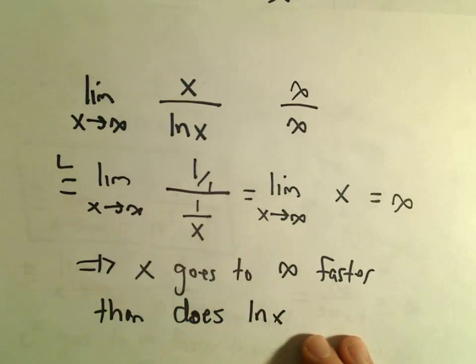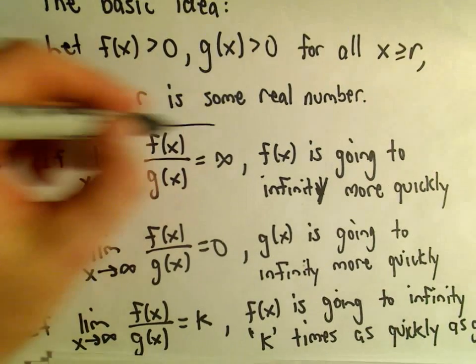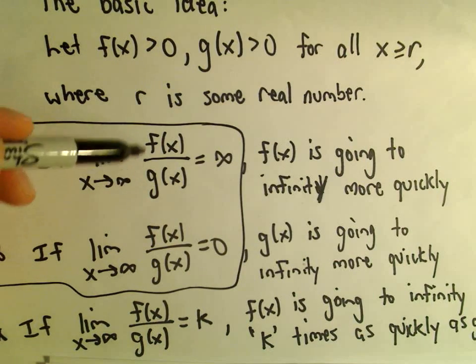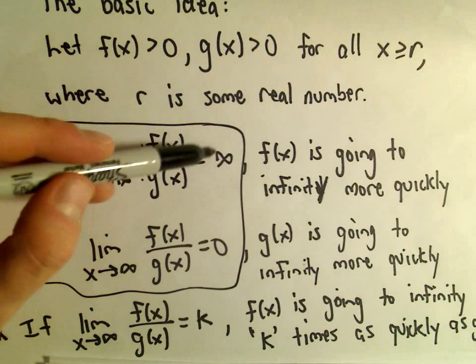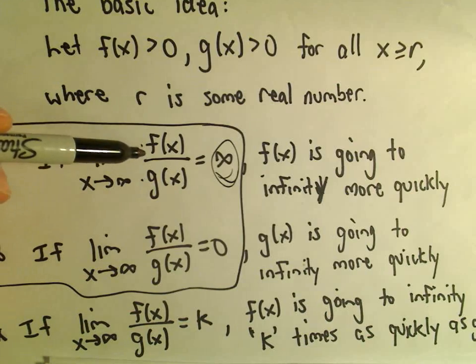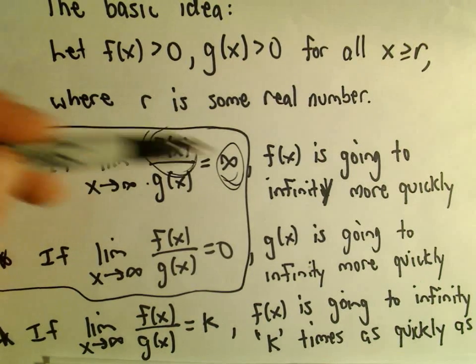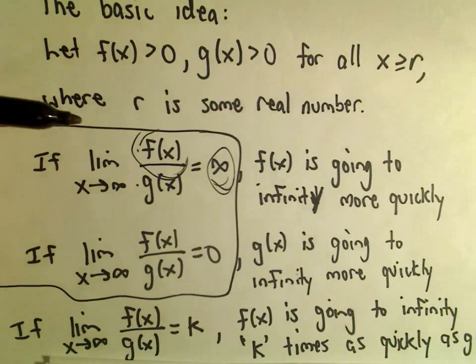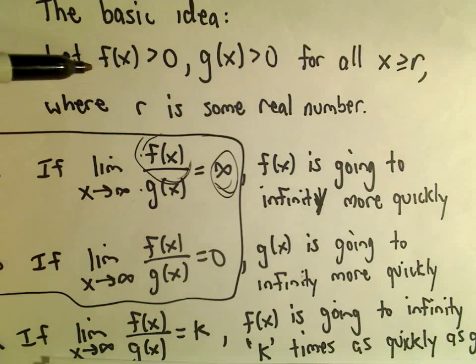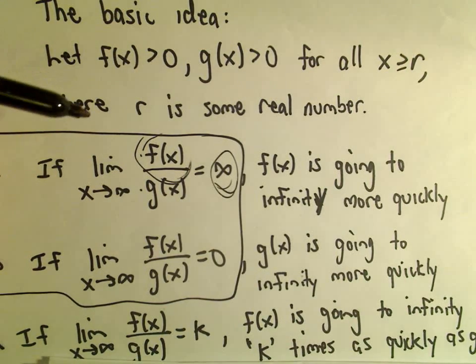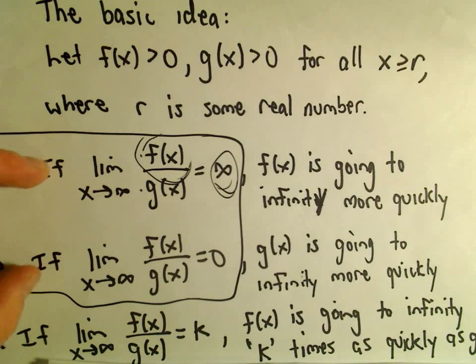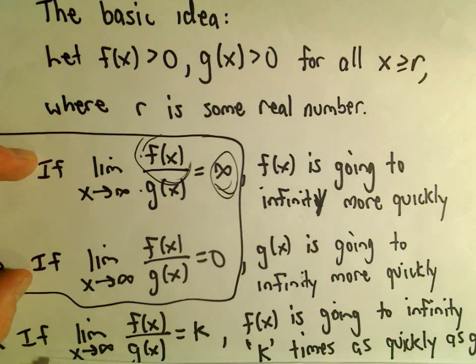So that's really all that's going on — it all just comes back to this result. Both functions could be going to negative infinity; the limit would still work out to be positive infinity, but in that case it just means the function in the numerator is going to negative infinity more quickly. Most of the time when you see these problems, the functions will be positive and they'll ask which one gets biggest the fastest — just use L'Hôpital's rule and look for one of these two outcomes.